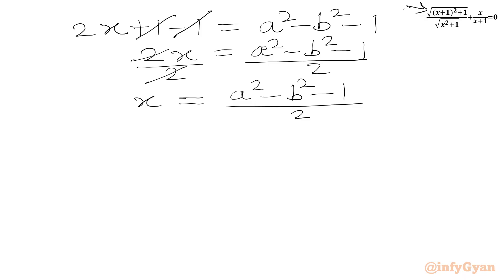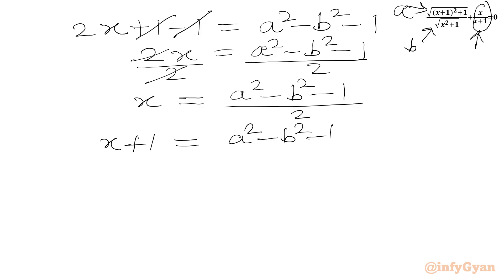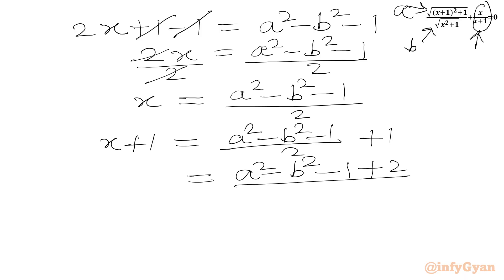Now we need to find x/(x+1), where the numerator is a and denominator is b. We find x + 1 = (a² − b² − 1)/2 + 1. Taking LCM, we get x + 1 = (a² − b² − 1 + 2) / 2 = (a² − b² + 1) / 2.